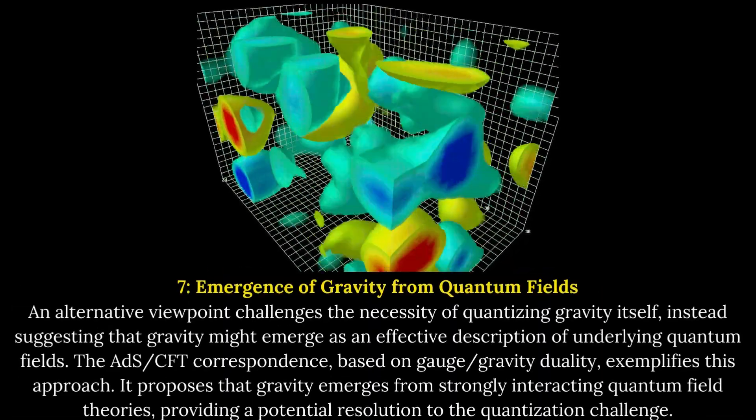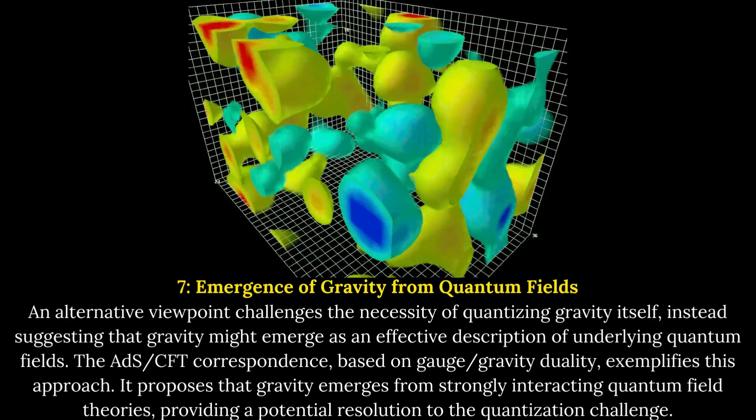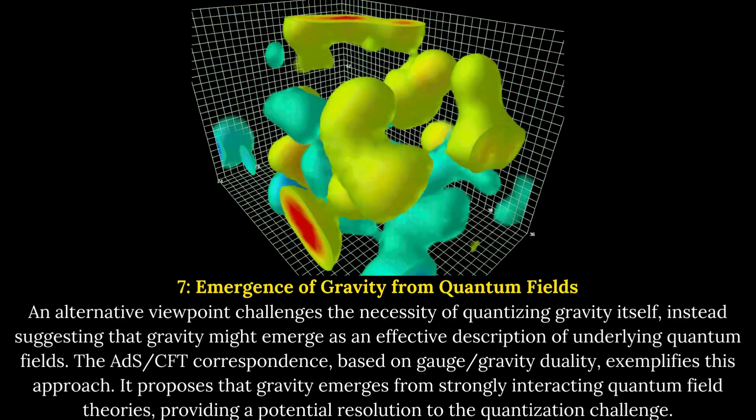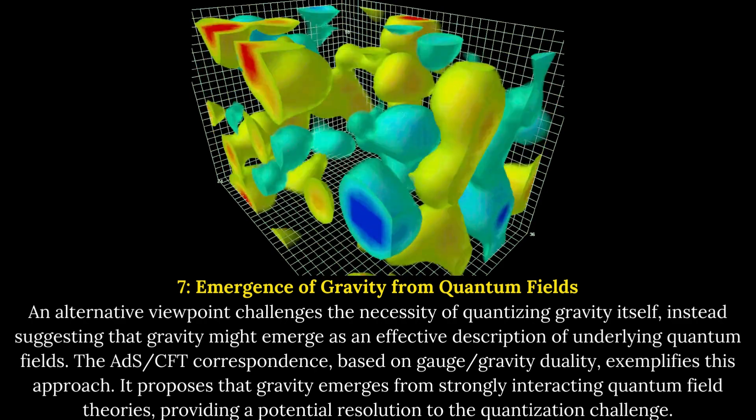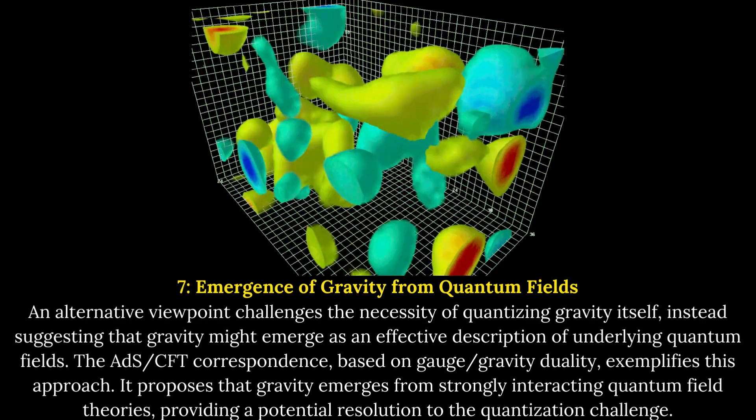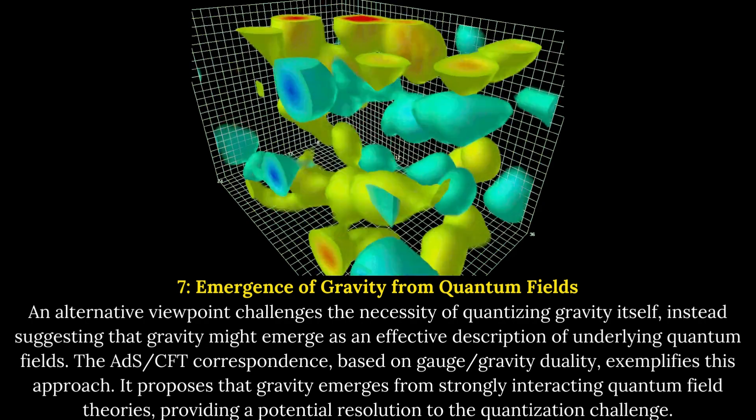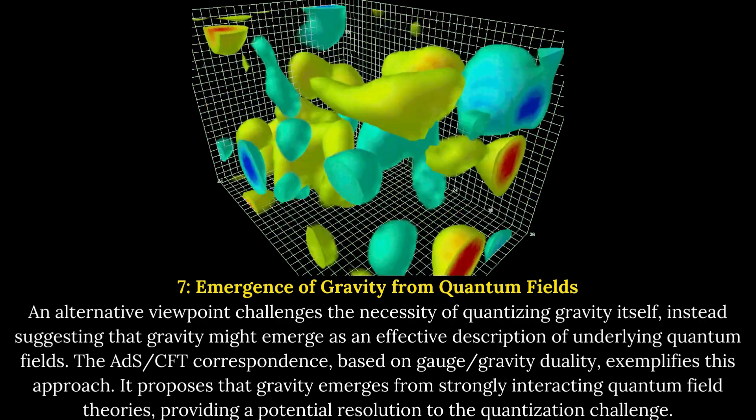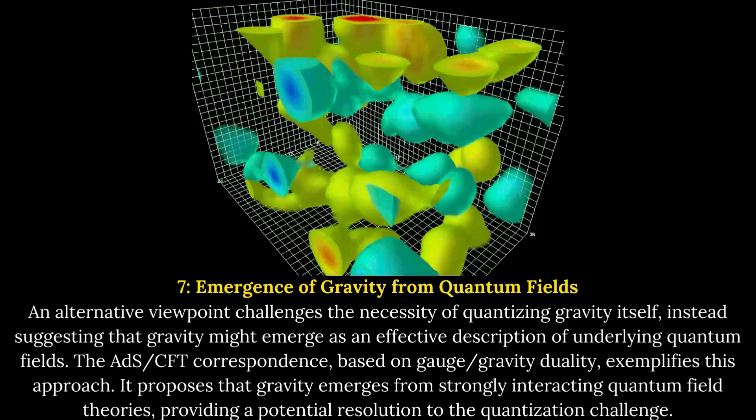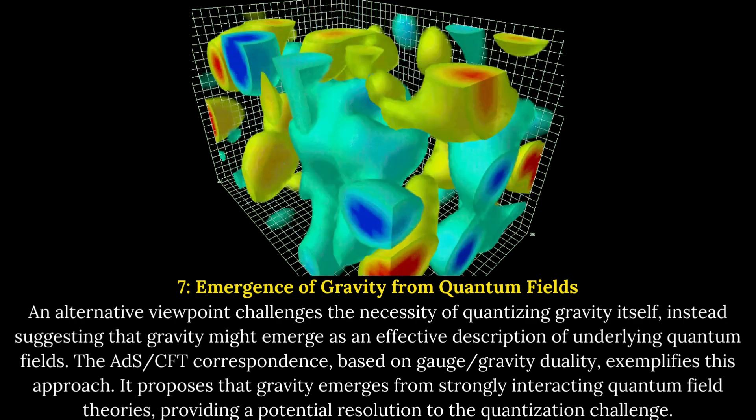Emergence of gravity from quantum fields. An alternative viewpoint challenges the necessity of quantizing gravity itself, instead suggesting that gravity might emerge as an effective description of underlying quantum fields. The AdS/CFT correspondence, based on gauge/gravity duality, exemplifies this approach. It proposes that gravity emerges from strongly interacting quantum field theories, providing a potential resolution to the quantization challenge.